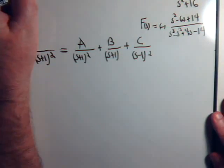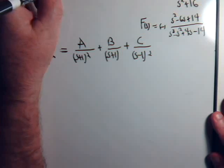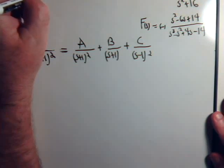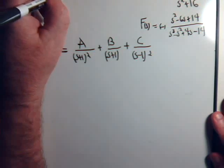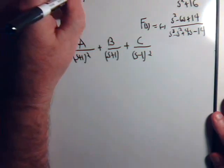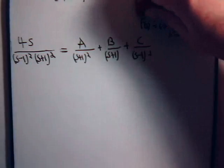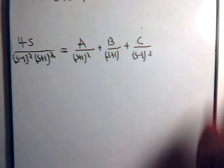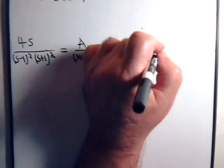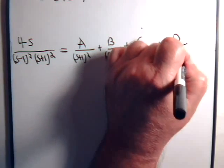And our last problem is minus s squared minus 6s plus 14 divided by s cubed minus s squared plus 4s minus 14. And now this is going to be plus D divided by s minus one.